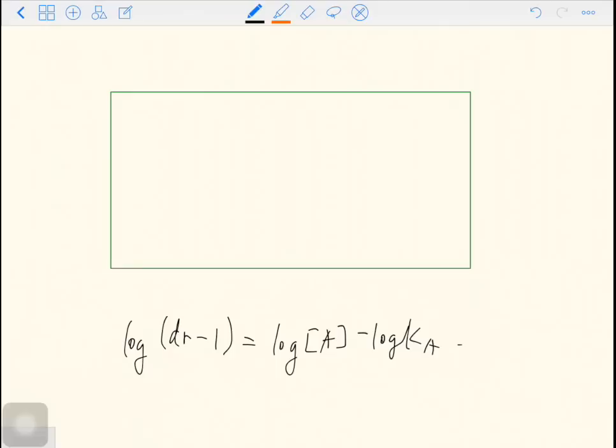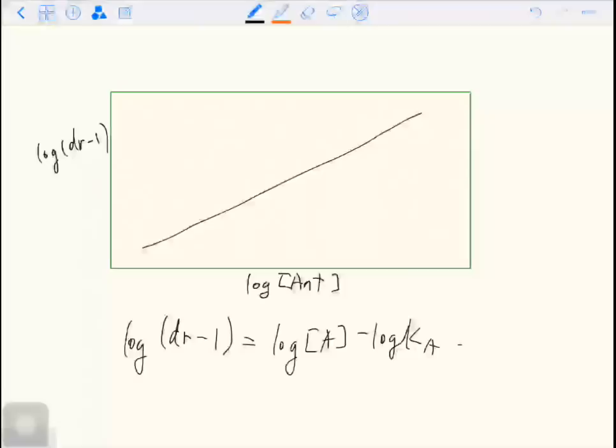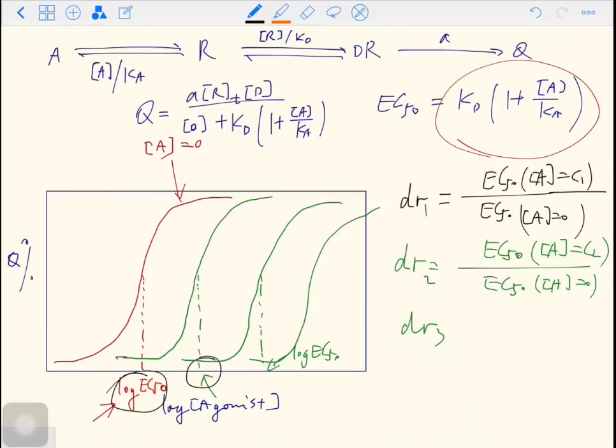On the y-axis, log dose ratio minus 1. On the x-axis is the log antagonist. If the Schild plot is valid, it should be a straight line that has a slope of 1, and the x-intercept is log Ka. This is how the Schild plot is constructed.